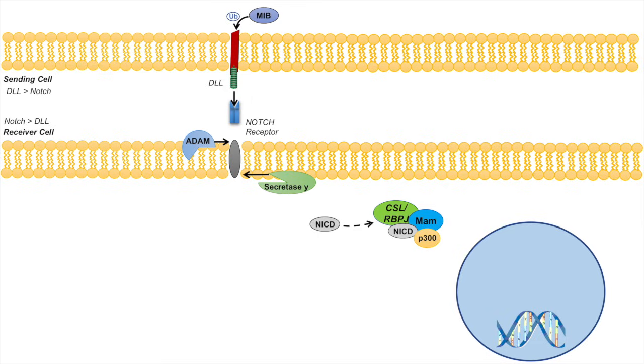This complex will then further bind to P300. This entire complex of proteins involving CSL, MasterMind, NICD, and P300 all translocate into the nucleus where P300 acts as a histone acetylase. And this whole complex can lead to the transcription of notch target genes.